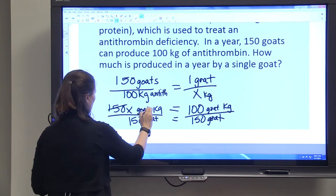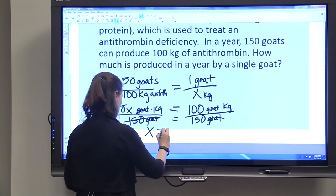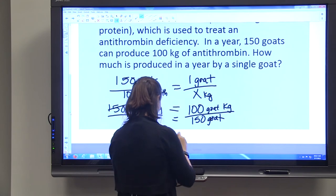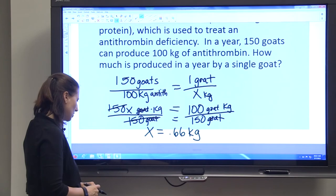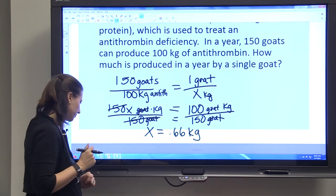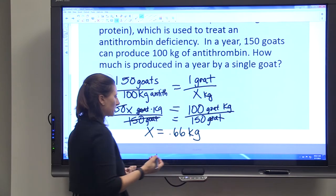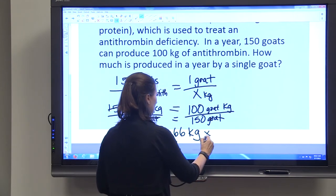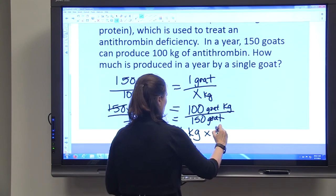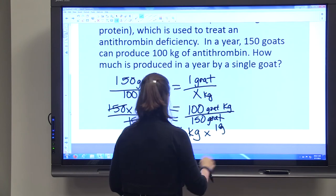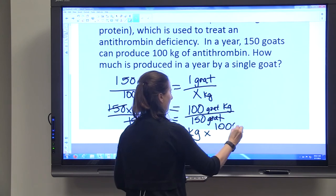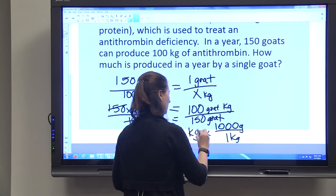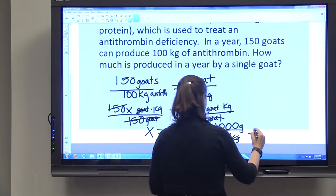So you're going to have 0.66 kilograms produced by one goat. You may want to convert that into grams. We just use our conversion factor here: 1000 grams per one kilogram. Get rid of the kilograms.